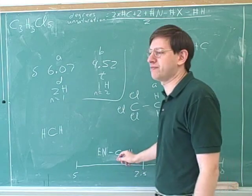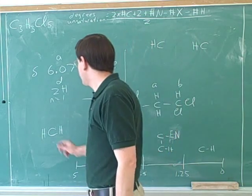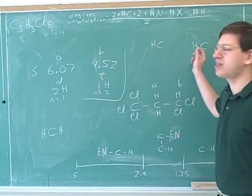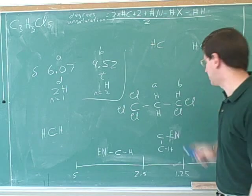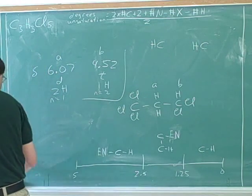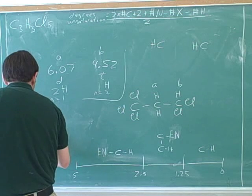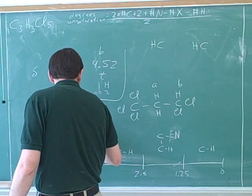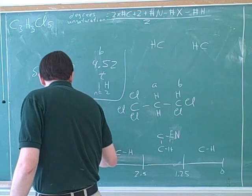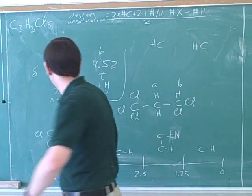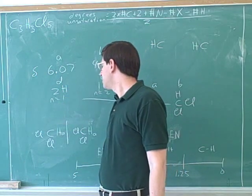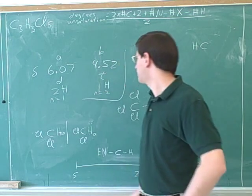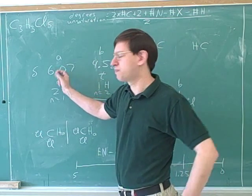There's no way I can put two chlorines on this carbon here, because then that would be the whole molecule. So it's looking like this has to be two separate CH fragments, each with two chlorines each. We can't assume when we see two hydrogens that they're both on the same carbon, although that's usually been the case in the past. This is really the only way to explain this huge chemical shift of 6.07.